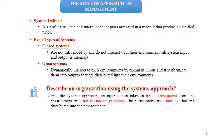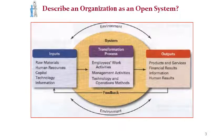An organization takes inputs — resources — from the environment and transforms them through a making process, distributing the resulting outputs back into their environment. The following figure describes the organization as an open system, which has three main components: inputs, transformation, and outputs.